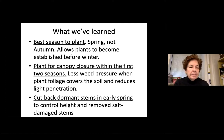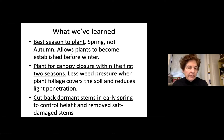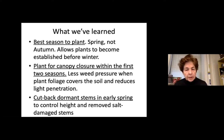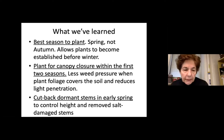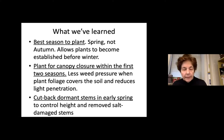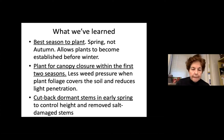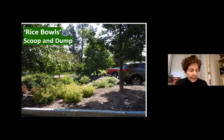Lessons learned: best season for planting is spring, not autumn — fall planting doesn't give plants time to establish before winter. We plant for canopy closure, where plant canopies touch each other within one to two years, greatly reducing weed pressure by minimizing light penetration to the soil. With a five-foot wide bioswale we still get weed pressure on edges, but canopy closure helps. Annual maintenance involves cutting back and removing salt-damaged stems. That covers the bioswale.